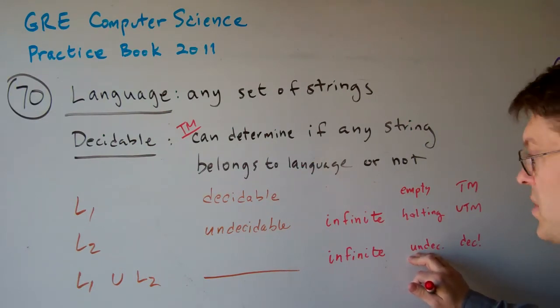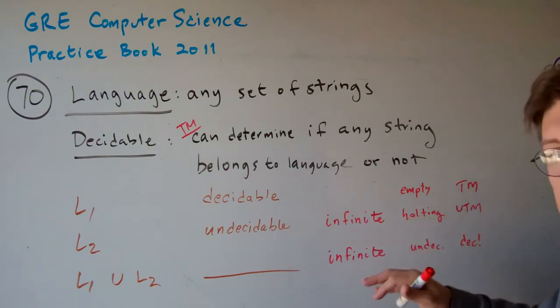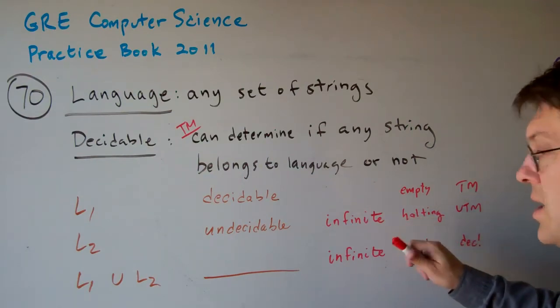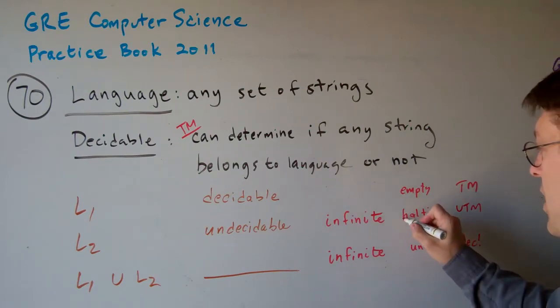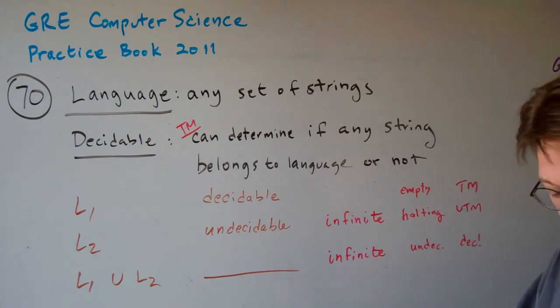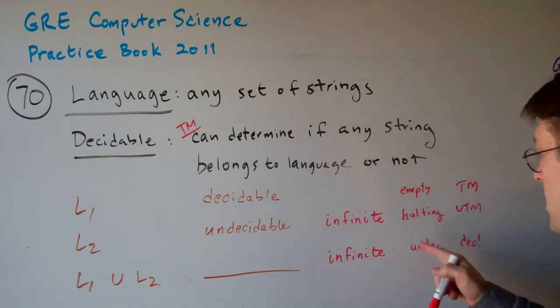The halting problem, you'll have to look at the halting problem, but it's basically the idea that, the proof that you can't determine whether or not a given machine loops forever. So, it's undecidable.